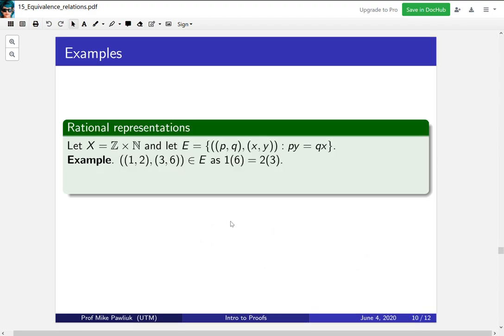Now let's look at a quite sophisticated example, which is X is going to be the set integers cross the naturals, and E will be the collection of all pairs of pairs, such that py is equal to qx. Now let's take a moment to understand what's going on before we continue.